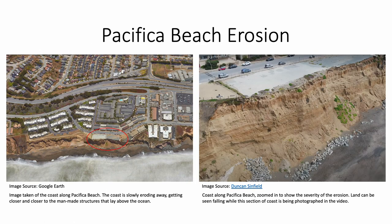This is a section of Pacifica Beach, which is not technically in San Francisco, but it's close enough. This emphasizes the need for managed retreat as erosion continues taking land away. These manmade areas are very close to collapsing, as you can see on the right, and it's circled on the left. The left shows eroded land slowly approaching the manmade structures, and the right is a zoomed-in picture showing the scale of the erosion, provided by Duncan Sinfields from a YouTube video watched in class.